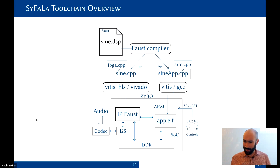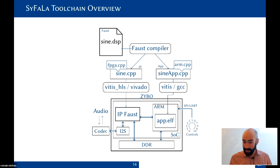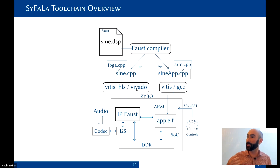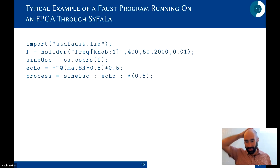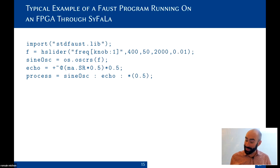Here's how everything works: a Faust file goes into the Faust compiler, which generates two files — one for the FPGA using the specific HLS C++ backend, and one for the ARM processor using the standard Faust C++ backend. The HLS output goes into Vivado, Xilinx's tool for synthesizing — that's what FPGA people call compiling.